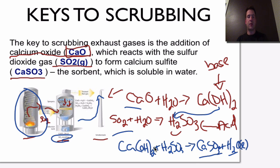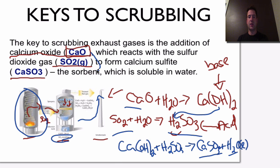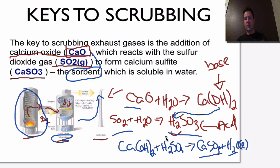We've taken that sulfur dioxide — that oxide — and seen the formation of an acid, which normally if released into the atmosphere would react with water and produce acid rain. But now we've created a chemical reaction and beaten that. We've separated this using the sorbent, which is the calcium oxide — combined the sulfur dioxide, broken it apart, and collected it.